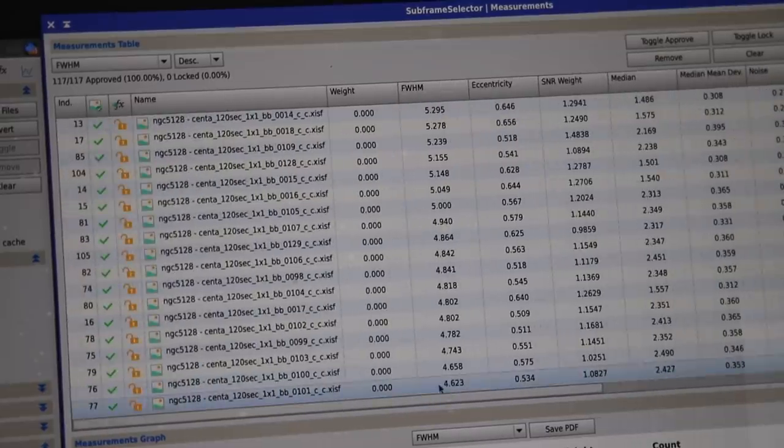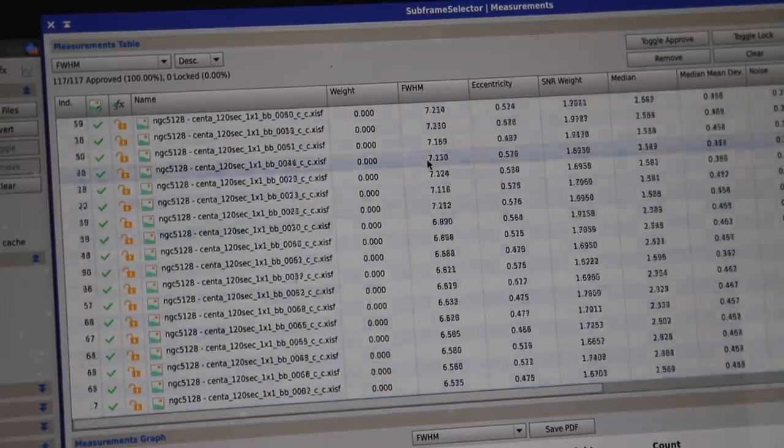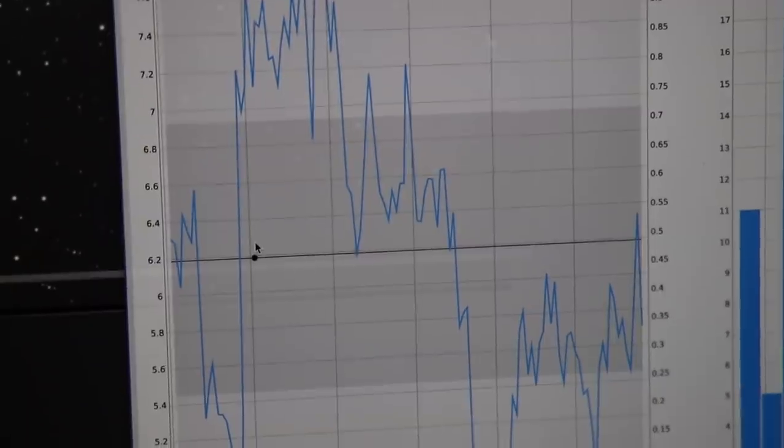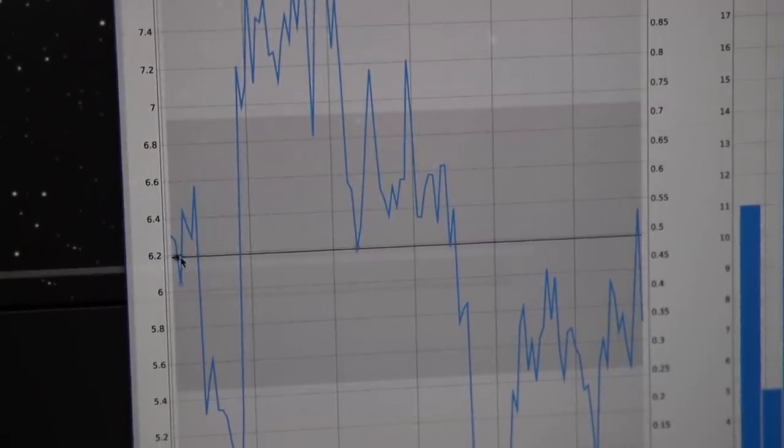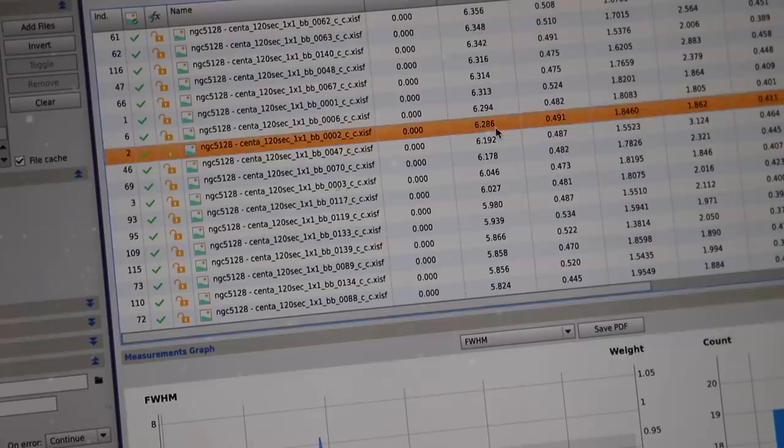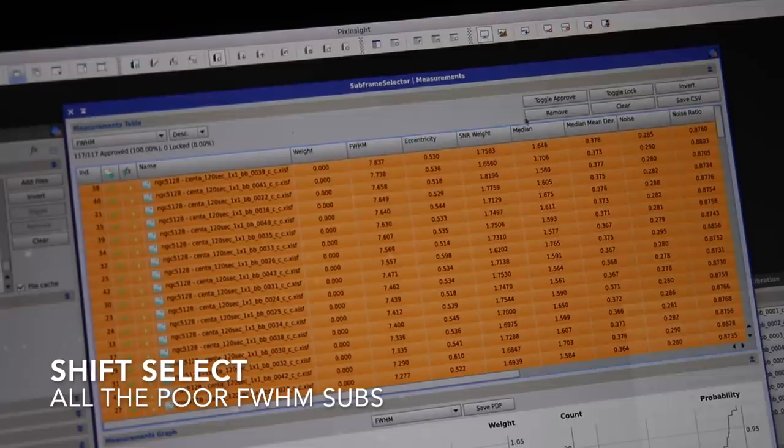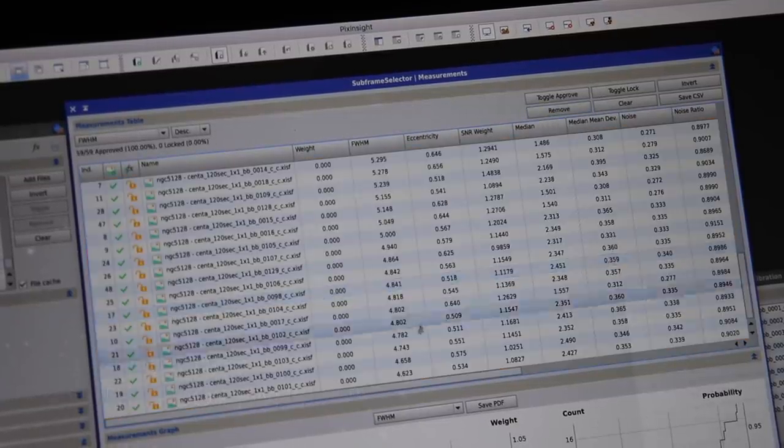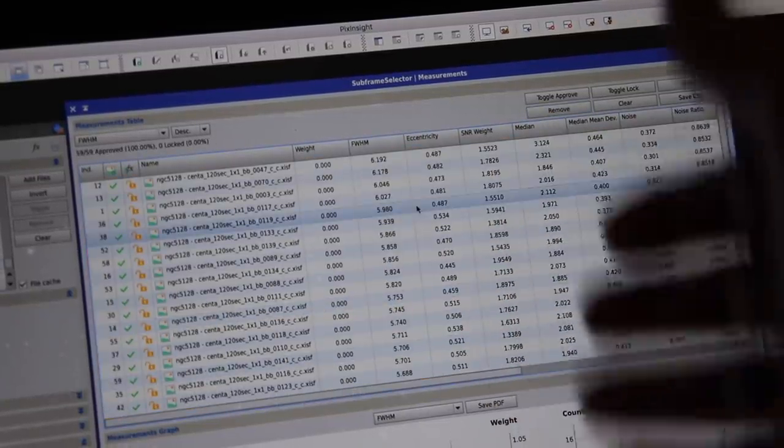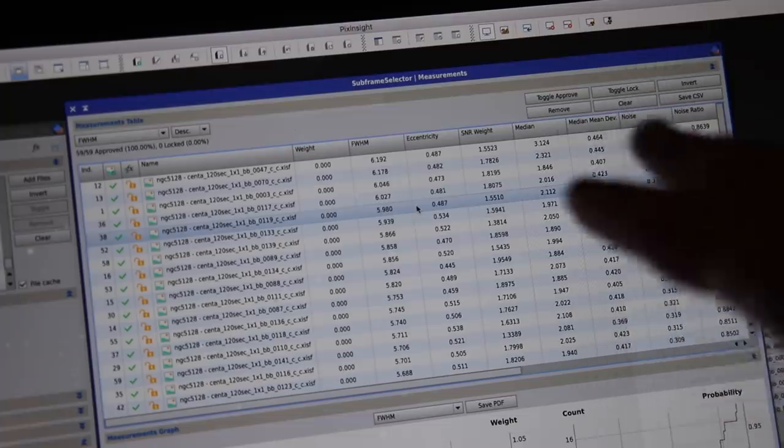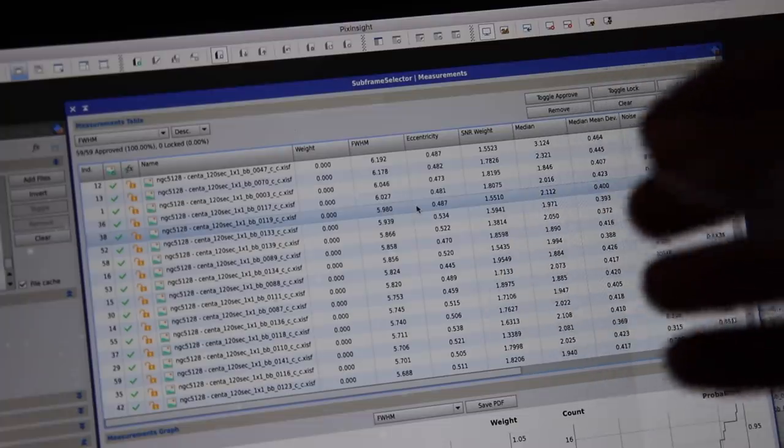Descending or ascending it doesn't matter so now this column here shows me the focus for all of them. The best focus we got was 4.6 and the worst was up here 7.8. On the graph here it says the halfway point is about 6.2 so I'm going to take it from about 6.2 onwards I'm going to shift all of those and then I'm just going to click remove. Now they're all gone that's pretty good so that'll show me every time the stars are in focus.